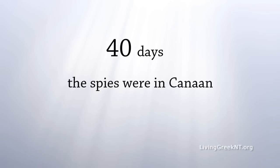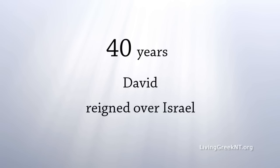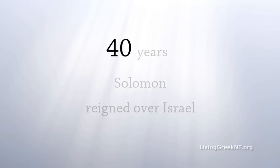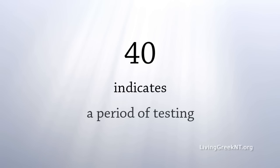The spies were in Canaan for 40 days. David reigned for 40 years over Israel. Solomon reigned for 40 years over Israel. These are a few of the many references in the Bible to 40. They are literal, but they are obviously also symbolic — they indicate a period of testing, something pre-ordained by God.